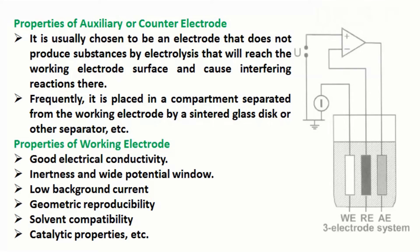Frequently, the auxiliary electrode is placed in a compartment separated from the working electrode by a sintered glass disk or other separator. Properties of working electrode include: good electrical conductivity, inertness, wide potential window, low background current, geometric reproducibility, solvent compatibility, and catalytic properties.